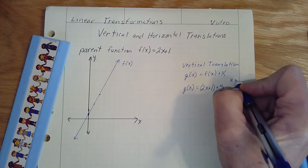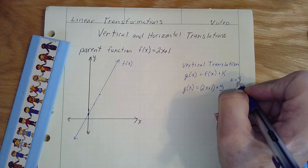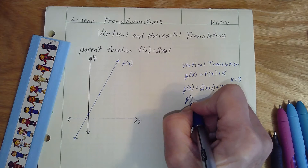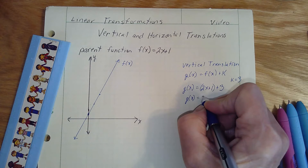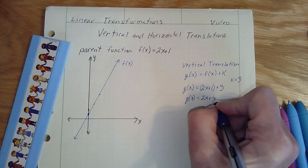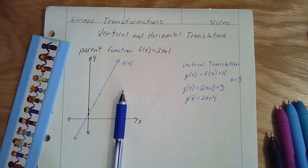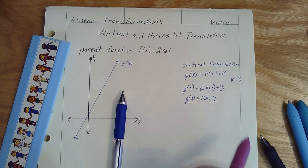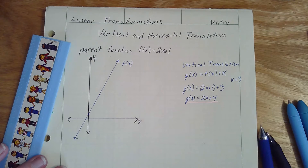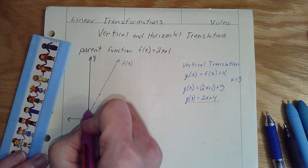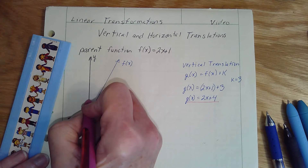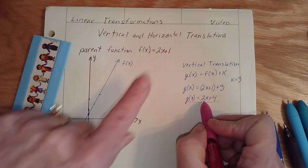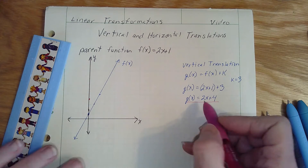k equals 3, that is a vertical movement upward. So my g of x would equal 2x plus 4. I'm plotting g of x in pink. My intercept is at 4, so I'm going to come up 2, 3, 4 spaces on my vertical axis. And it also has a slope of 2, which is good because we're sliding it.